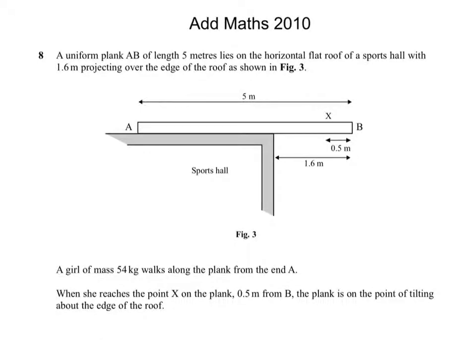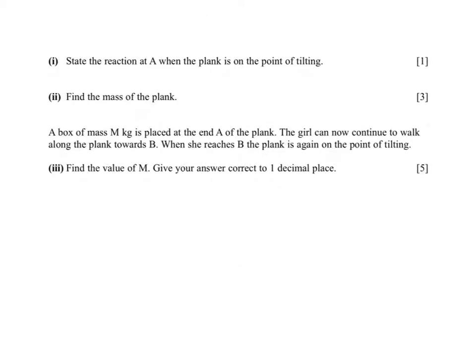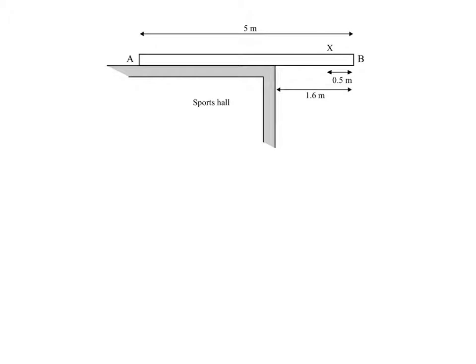2010 paper 2 question 8. At the point of tilting, A is raised and there will be no reaction at A, so the answer to part 1 is 0 newtons. We will have a reaction force at this point which will be acting as a pivot.